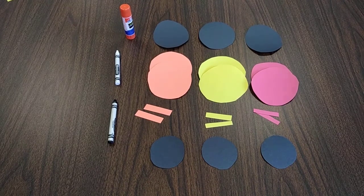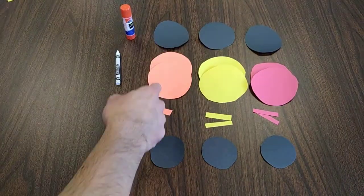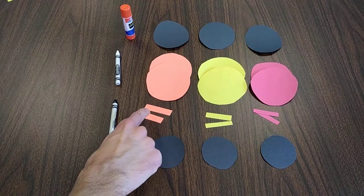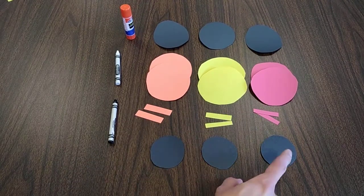So in your kit, you should have three large black circles, two each of orange, yellow, and red circles, strips of orange, yellow, and red, and three small black circles.